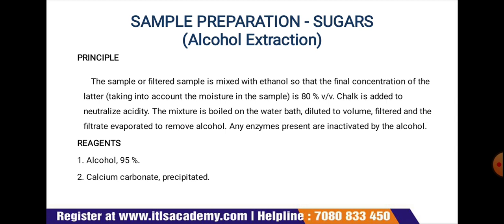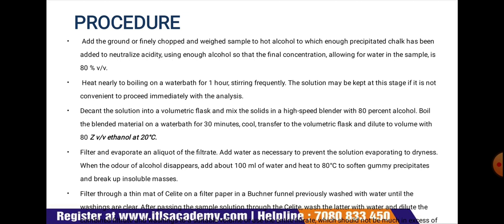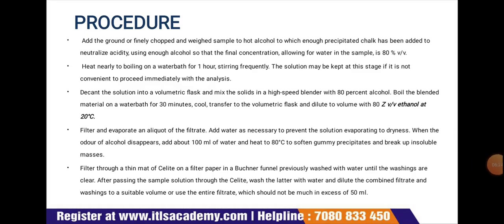Chalk is added to neutralize the acidity. The mixture is boiled on the water bath, diluted to volume, filtered, and the filtrate evaporated to remove alcohol. Any enzymes present are inactivated by the alcohol. The reagents required are 95% alcohol and precipitated calcium carbonate. Add the finely ground and baked sample to hot alcohol to which enough precipitated chalk has been added to neutralize the acidity, using enough alcohol so that the final concentration allowing for water in the sample is 80% volume by volume. Heat nearly to boiling on a water bath for one hour, stirring frequently.